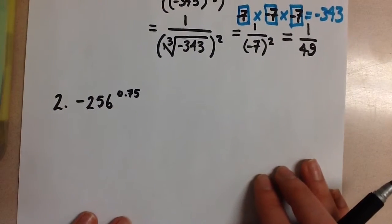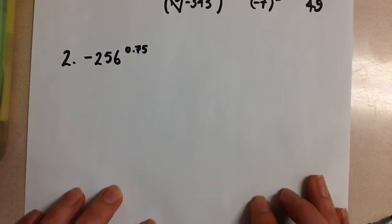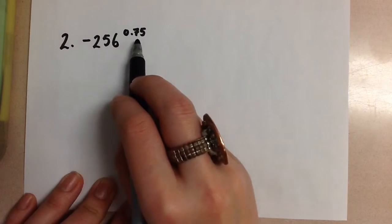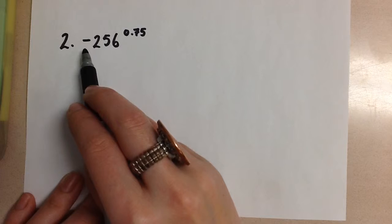Let's look at this one now as another example. We have negative 256 to the power of 0.75. The first thing you want to take note of is that the negative is not in brackets associated with this exponent, so that negative is going to stay outside of the exponent and we're going to carry it through until the end.